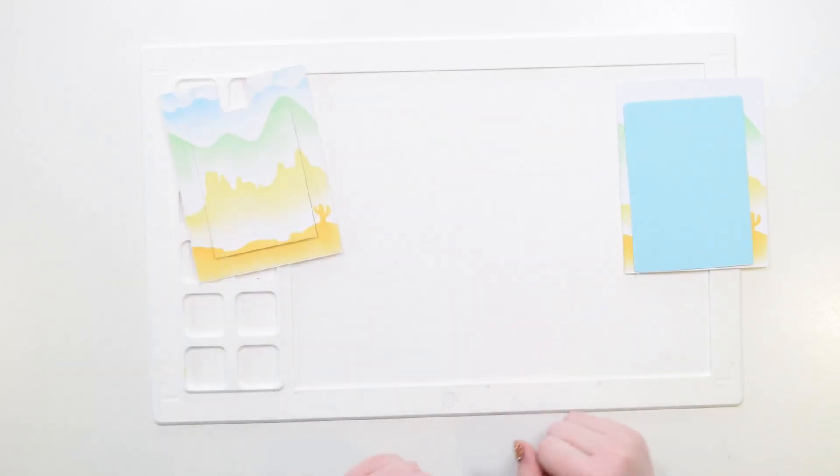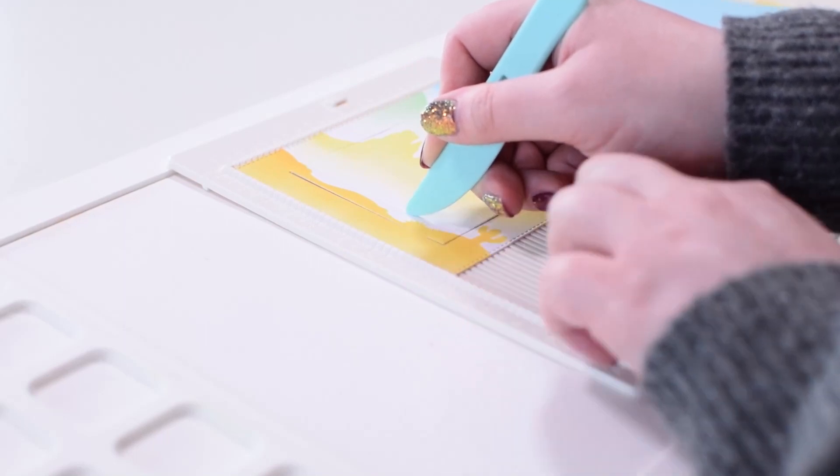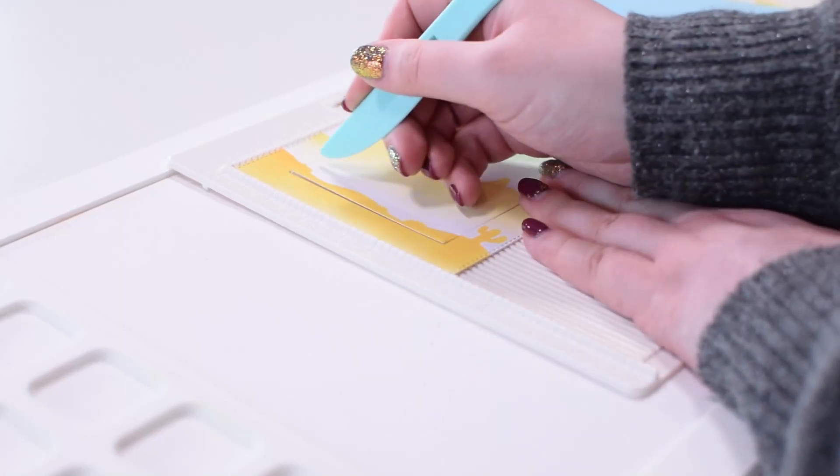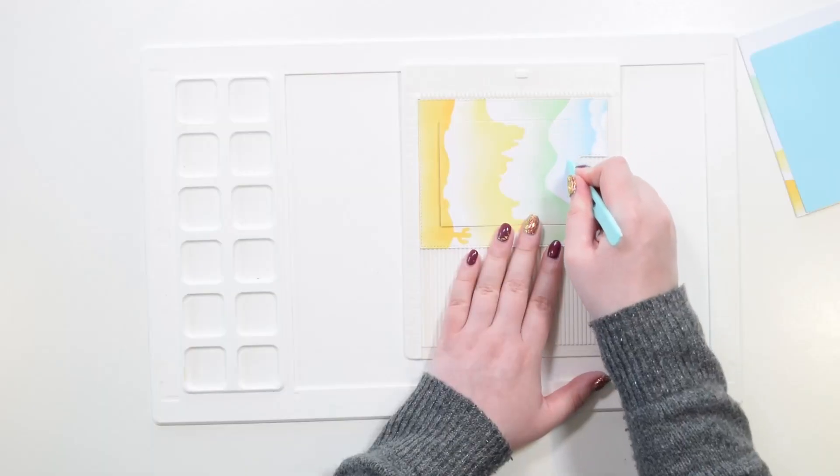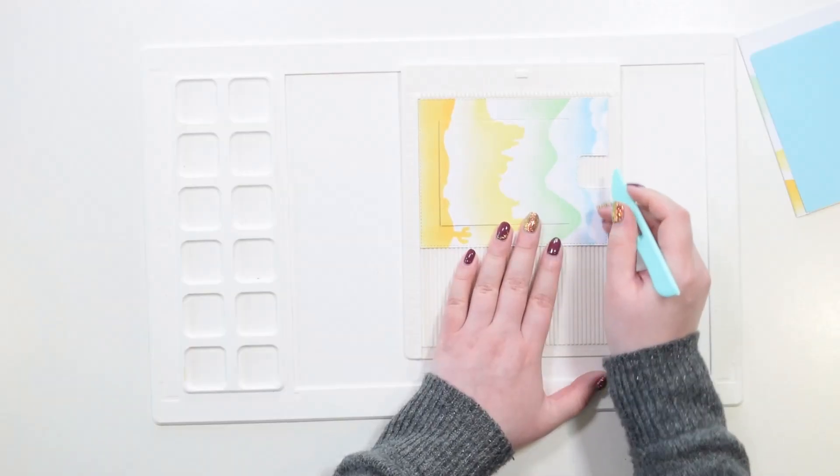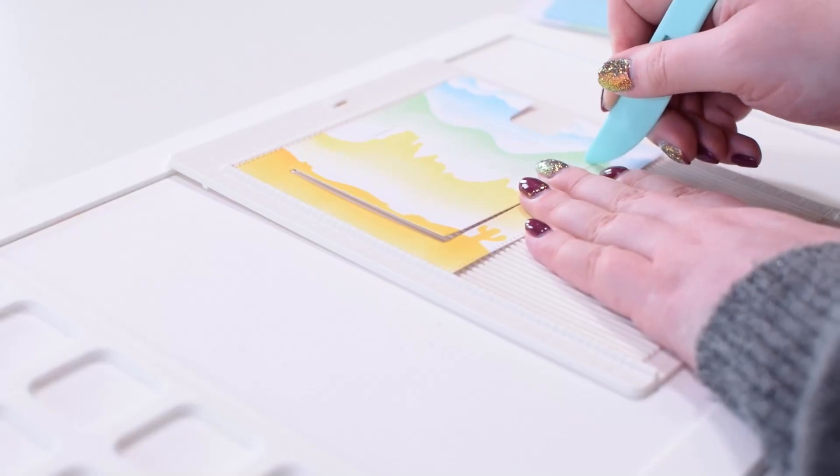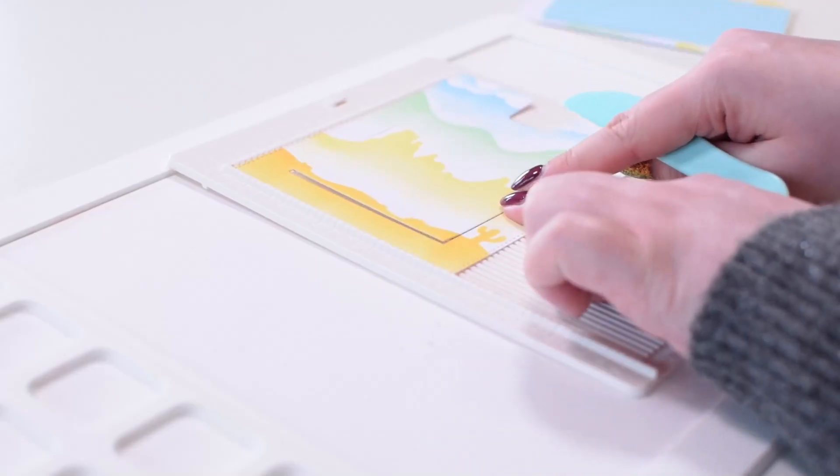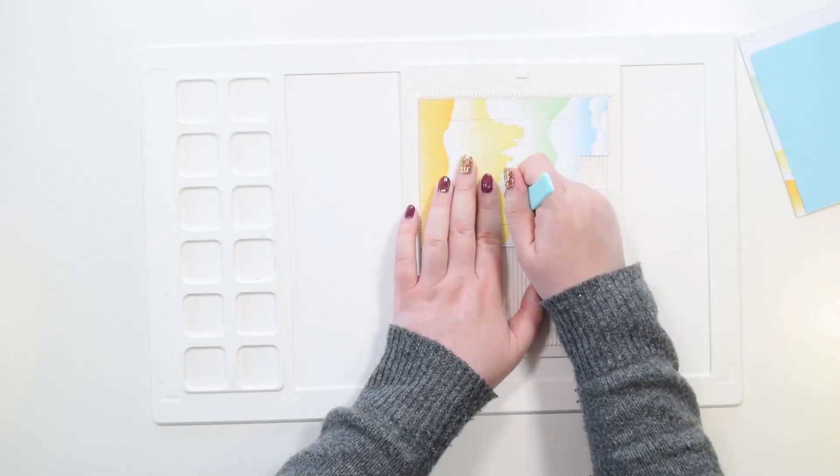This is really easy to do. Just pop your front panel on a scoreboard and use the tool to score down the lines already there for you. With the top and bottom creases on your card, you need to make sure you score these with the design facing up so the creases bend in the right direction. For the crease line in the middle, you'll want to flip your design round.